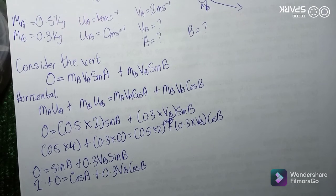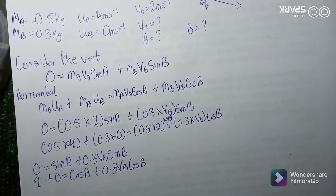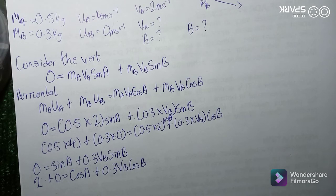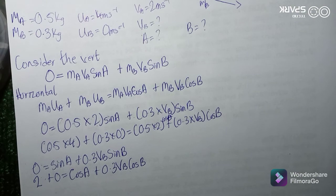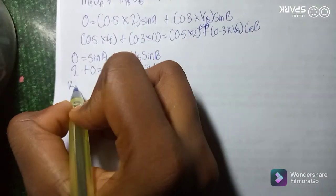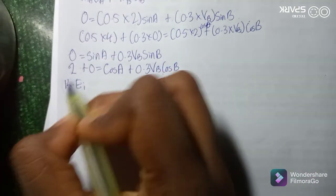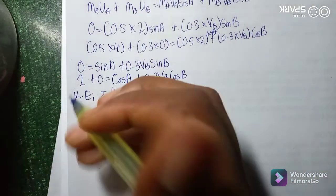Let's look at the question again — it says it's an elastic collision. In an elastic collision, the total kinetic energy before the collision equals the total kinetic energy after the collision. So we can write: KE_initial = KE_final.